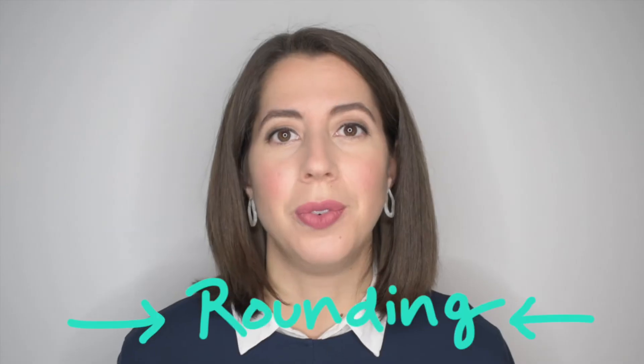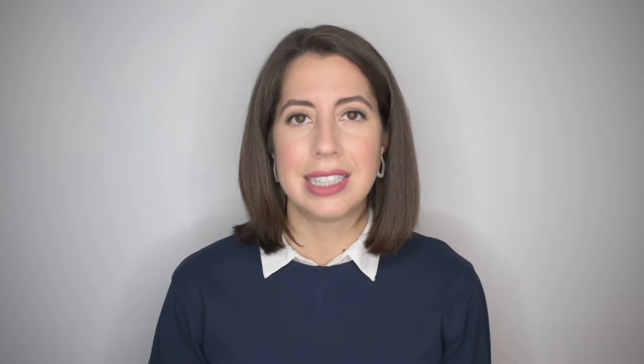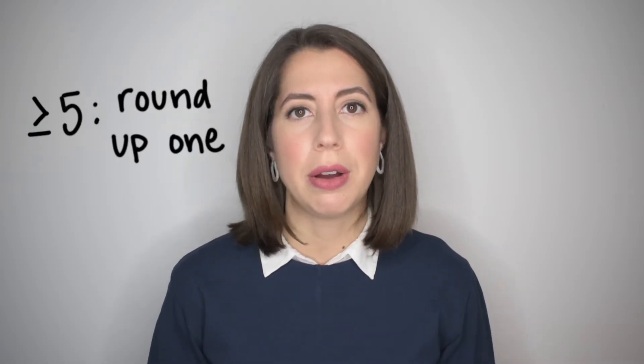But first, here's a note on rounding. A digit less than 5 to the right of a number means it stays the same. A digit greater than or equal to 5 to the right of a number means you round it up 1.